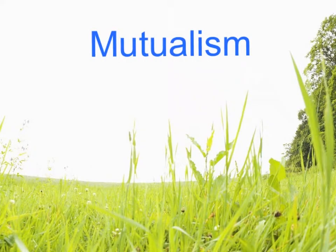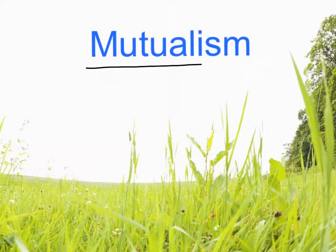The first relationship we're going to look at is mutualism. In the word mutualism, we see the smaller word mutual, and mutual means something that's shared, something in common between two people or two organisms. For example, two people have mutual respect for each other — each one has respect for the other. So with mutualism, what's being shared is that both organisms benefit from the relationship.